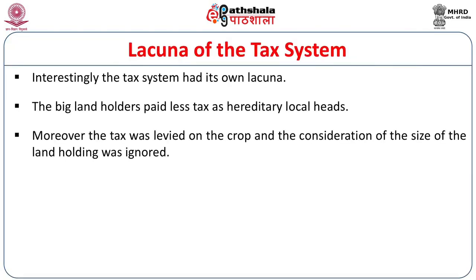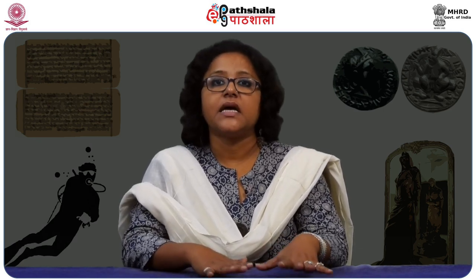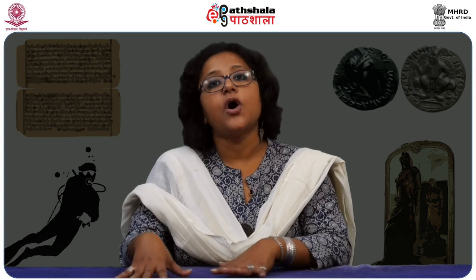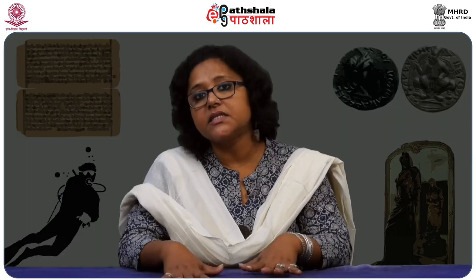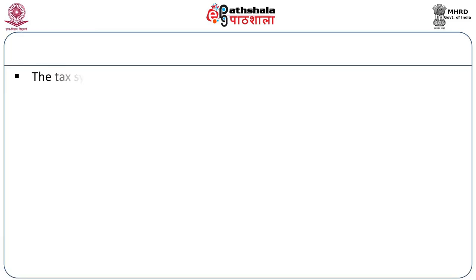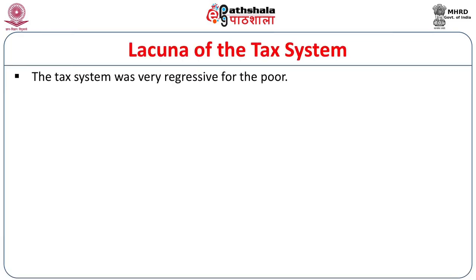The tax was levied on crop, and the size of the landholding was not ignored. But when a big landholder held a larger amount of land and received a greater surplus, the extraction from a smaller peasant and a larger one always remained the same. At times, rural leaders paid much less. Anyone with less landholding could incur less income but had to pay the same tax on the crop that was grown. This system had its own drawback — the tax system was very regressive for the poor.